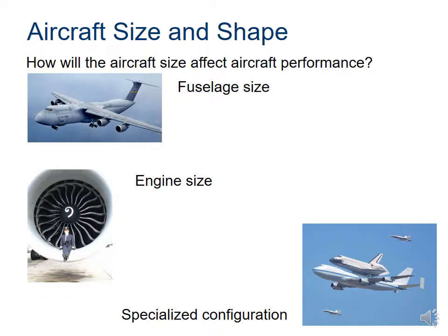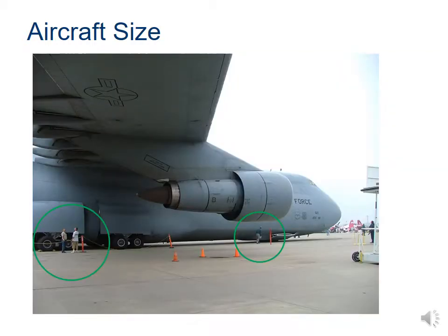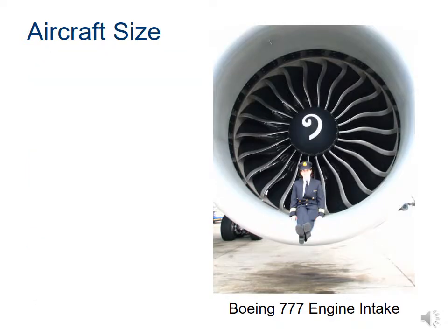Aircraft size affects performance — considering fuselage size, engine size, or specialized configuration. The Lockheed C-5 Galaxy is an example of a very large aircraft, and its scale is enormous compared to people standing next to it. Also notable: it has flaps on the front end. The power plant of this aircraft absolutely dwarfs the pilot. The swirl pattern inside the power plant is a safety mechanism — if you can see the swirl, the engine isn't spinning; if it were spinning, you would not see it.